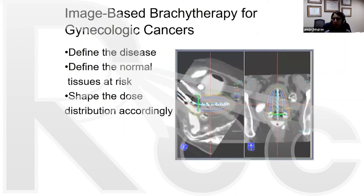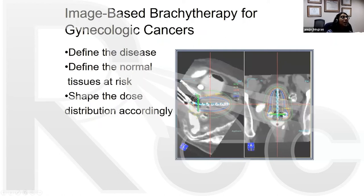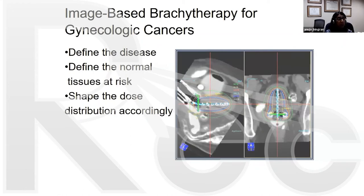Now let's talk about where we're moving to: image-based brachytherapy. The advantage is that it defines the disease — you can actually see the tumor — but key is you can also see the normal tissues: bladder, rectum. With image-based brachytherapy we also get sigmoid doses, which we were not measuring before, and you can shape the dose distribution to true anatomical structures instead of just points.